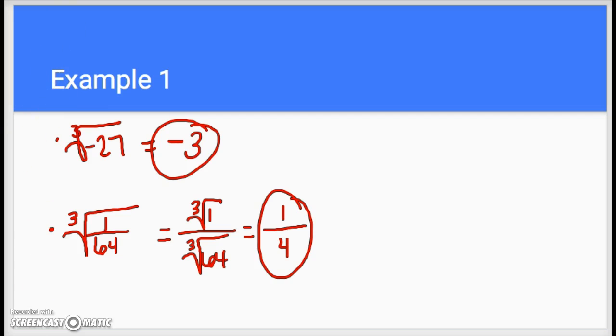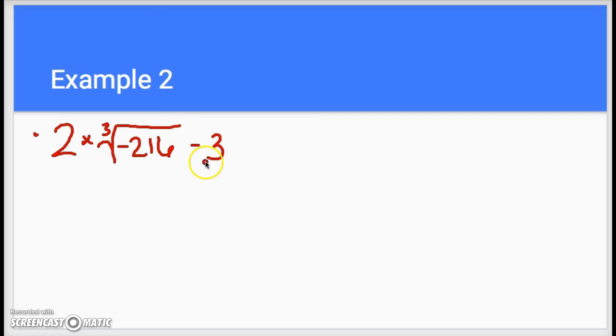Okay, then moving on to examples where they're actually embedded into a problem. So if we have a problem like this, it's two times the cube root of negative 216 minus three.